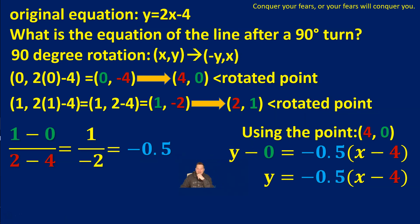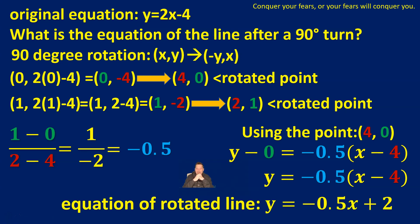Lastly, distribute that slope of negative 0.5 to each term inside the parentheses. When I do that, the equation of our new rotated line will be y equals negative 0.5x plus 2. This 2, positive, comes from doing negative 0.5 multiplying negative 4. That gives you a positive 2, and so this becomes the answer.